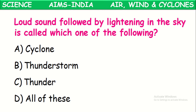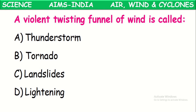Loud sound followed by lightning in the sky is called a thunderstorm. We might have observed before raining — loud sounds come from the sky with a certain flash of lighting. Those are called thunderstorms. A violent twisting funnel of wind is called a tornado.